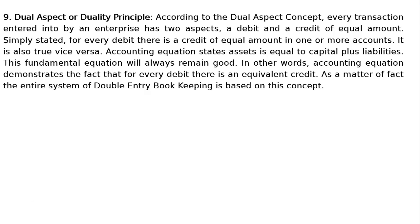The ninth principle is the Dual Aspect or Duality Principle. According to this concept, every transaction entered into by an enterprise has two aspects — a debit and a credit of equal amount. Simply stated, for every debit there is a credit of equal amount in one or more accounts, and vice versa. The accounting equation states: Assets = Capital + Liabilities. Thus, the fundamental equation will always hold. The entire system of double entry bookkeeping is based on this concept.